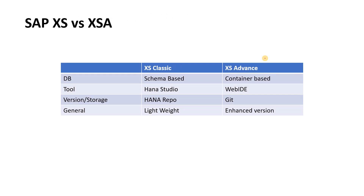Coming back to XS Classic versus XSA: XS Classic is schema-based while XSA is container-based. Earlier we used HANA Studio; now we have Web IDE. Earlier we had HANA Repo to store and version our objects; now we have Git. XS Classic is lightweight while XSA is heavier but has a lot of other advantages and options.